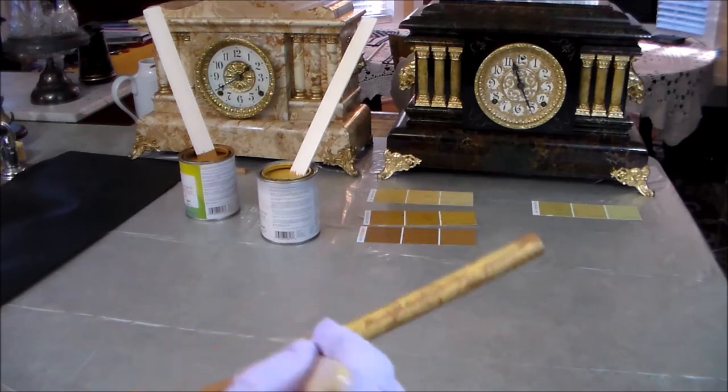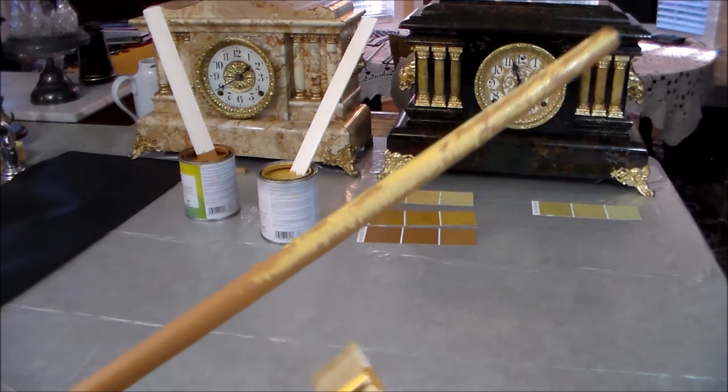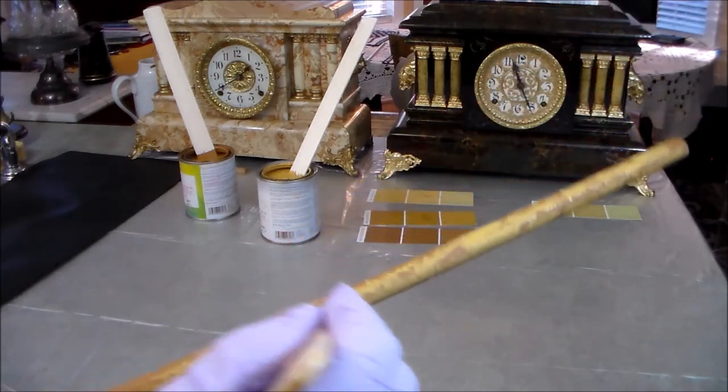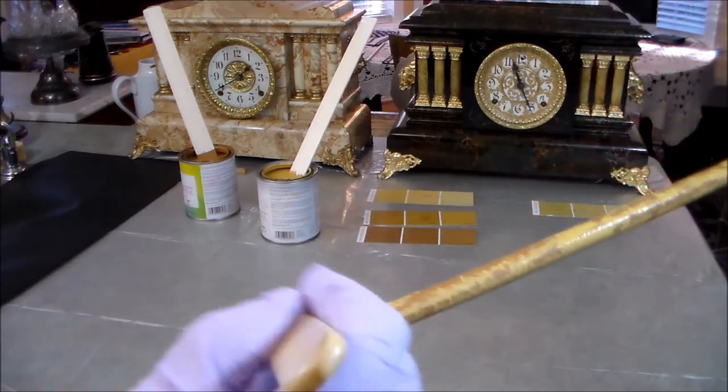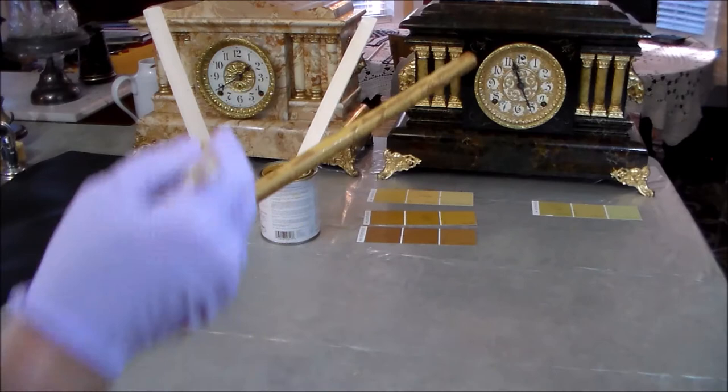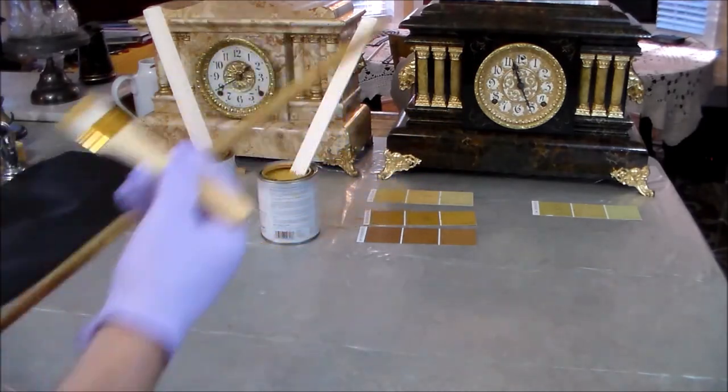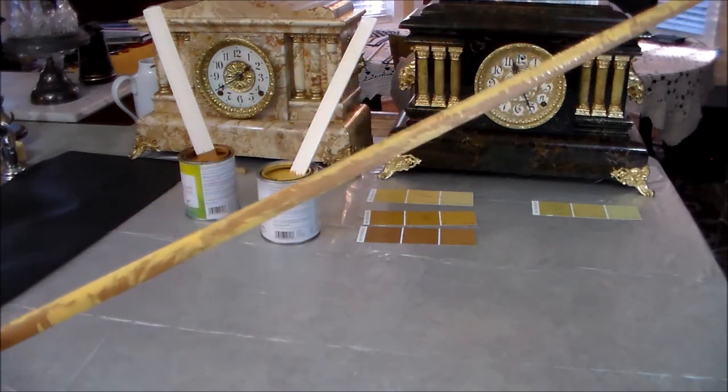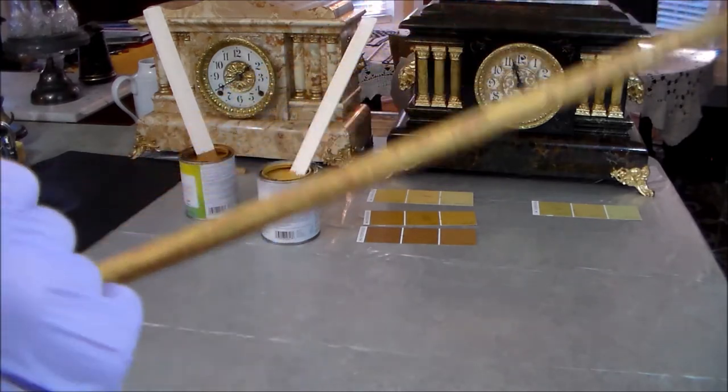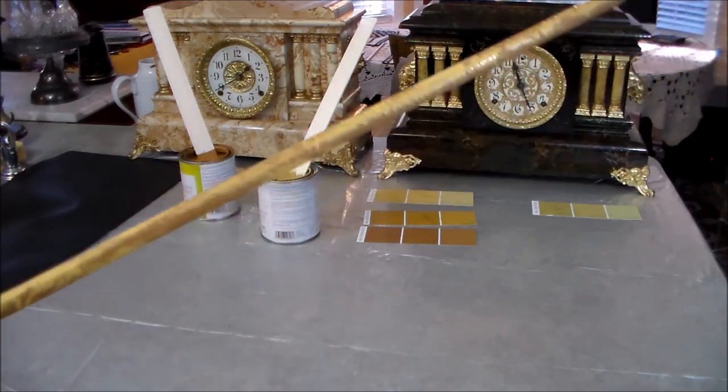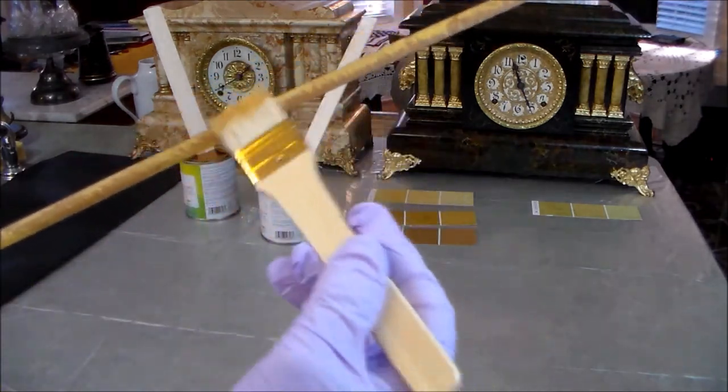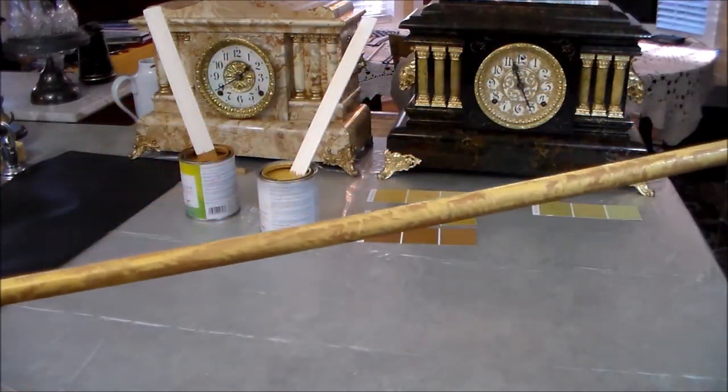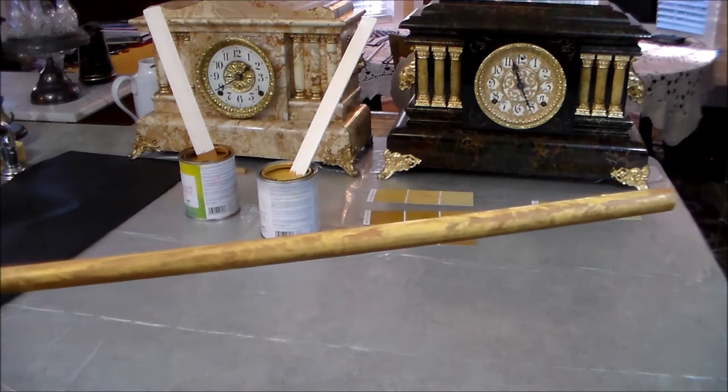So, we get kind of a marbleized look covering it up here. Just go ahead and you don't want to go in the same direction or it will not look natural. And you don't want to get really too much on or you won't come up with a good marbleized coat. So, you can see we're starting to look like a black mantel column.